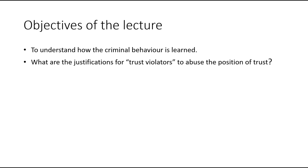Before we go on to understand this, let's first look at the objectives of the session. First, to understand how criminal behavior is learned. Second, what are the justifications for trust violators to abuse the position of trust. In the last session we talked about that earlier criminal theories were focusing on the aspects that criminality is to be associated either with the physical attributes of a person or with the social conditions that they were living in.